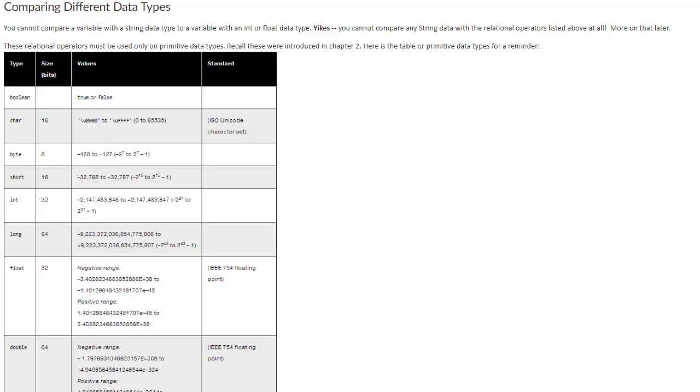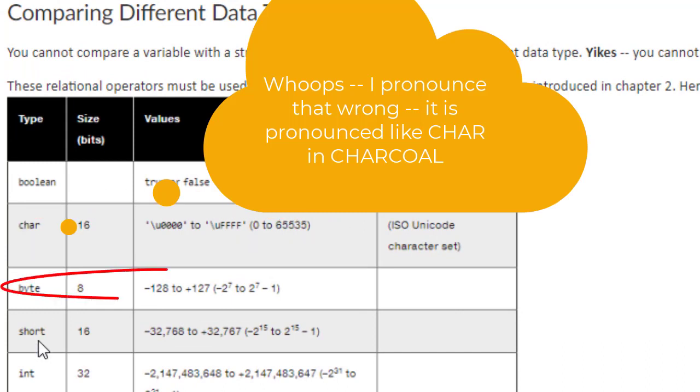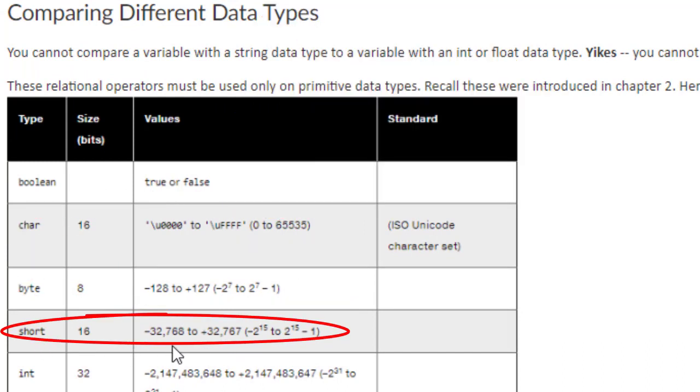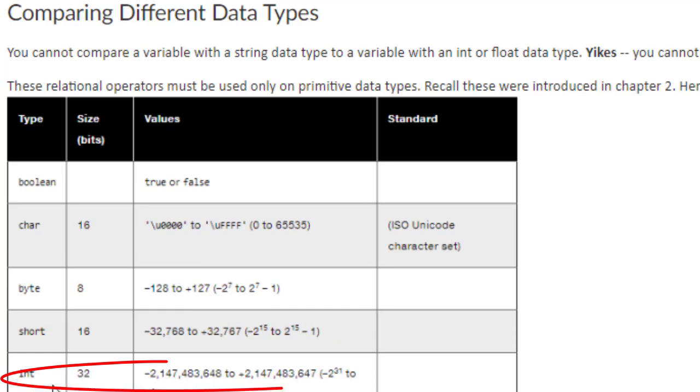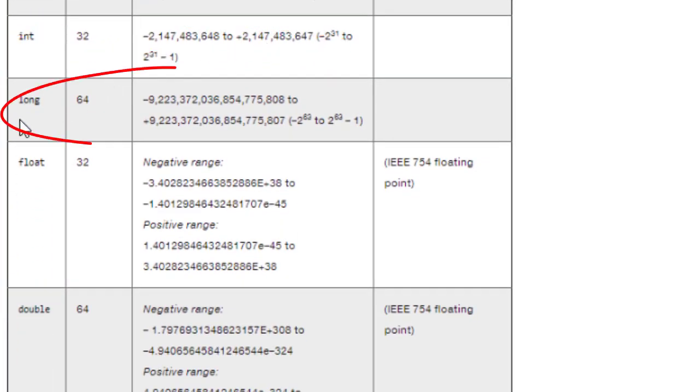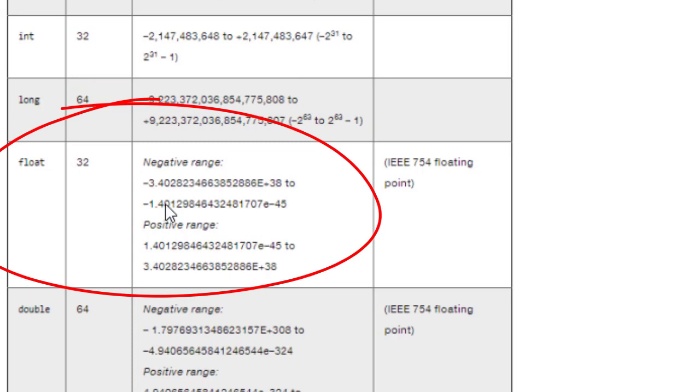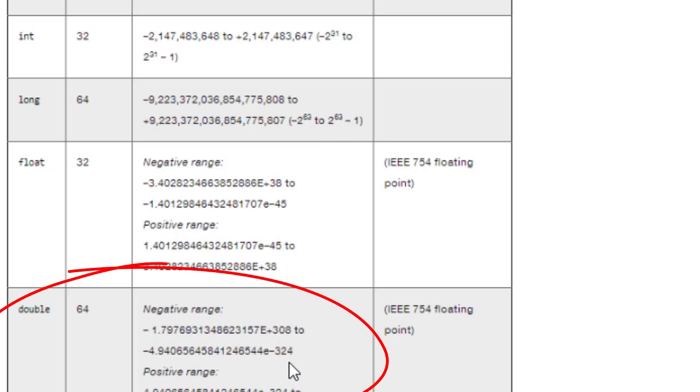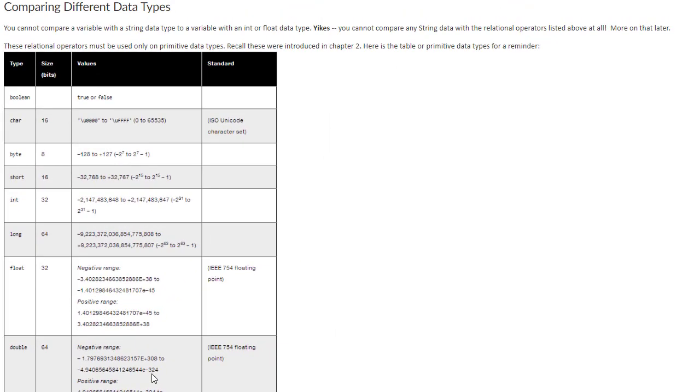One thing about using these comparison operators is that you're going to be using them on primitive types. Here is a list of the primitive types. We covered it in chapter two: boolean, char, byte, short. Short is also an integer, but it has a very low range between negative 32,000 and 32,000. Int is an integer with a much larger range, and long is another integer with an even larger range. We have float, which is more in line with precision than range, and we have double, which has very high precision compared to float. We can use those operators on these data types.